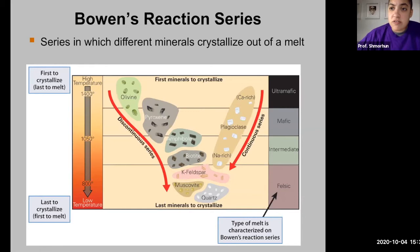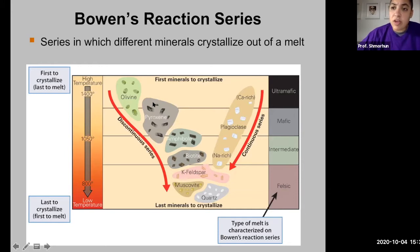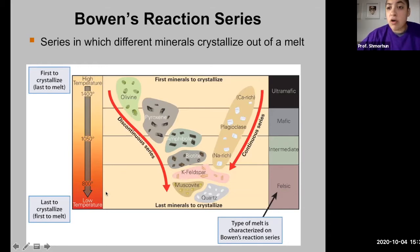Bowen's reaction series was created in the early 1900s from a series of laboratory experiments that looked at the rate at which minerals would begin to cool out of a melt. What was noticed was that some minerals preferentially cool at higher temperatures and some minerals preferentially cool at lower temperatures.